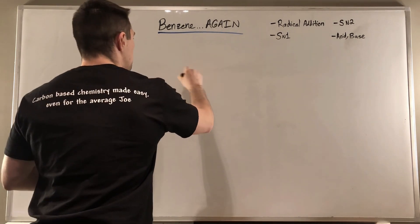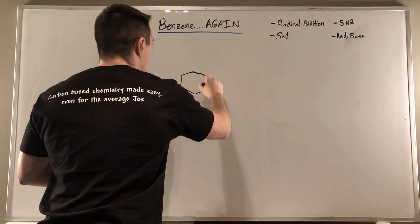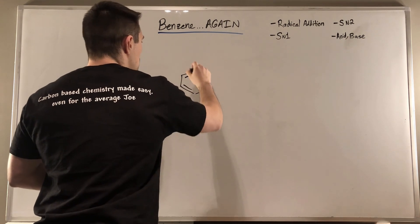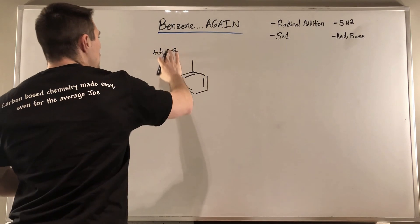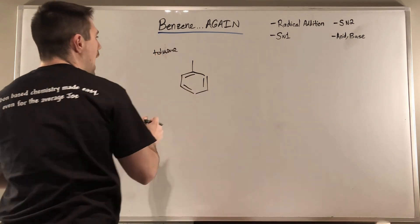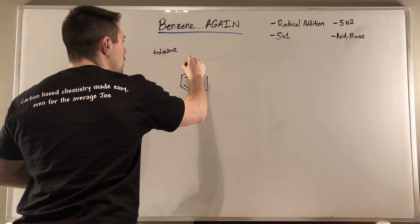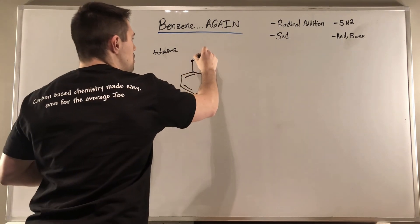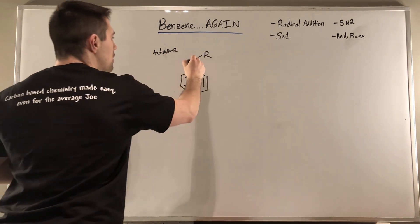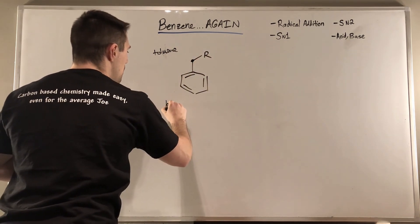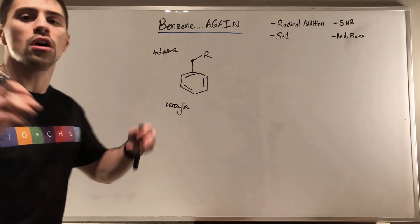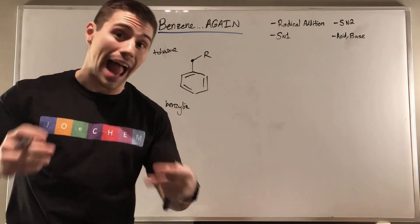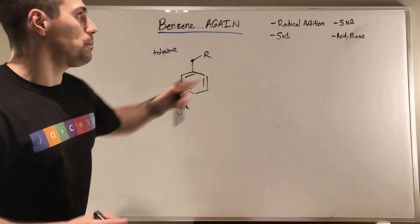If we look at a benzene ring, and I even draw something as simple as toluene. This is the common name. Just benzene with a methyl group, a CH3 off of it. Anytime you have a carbon off of your benzene ring, I can make this generic by putting that as an R group. This position right here is called your benzylic position.